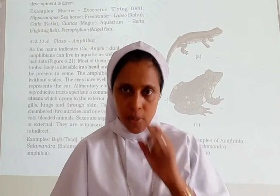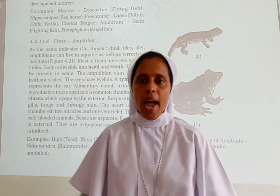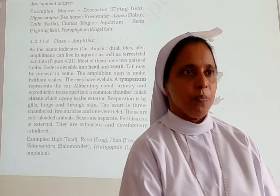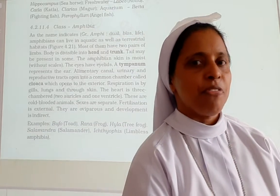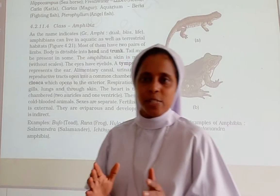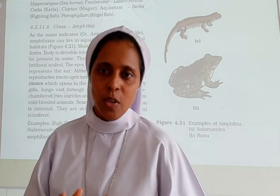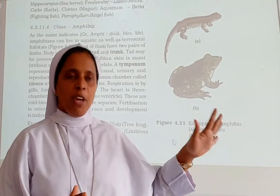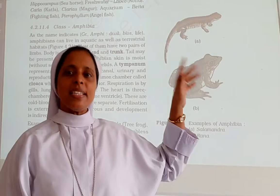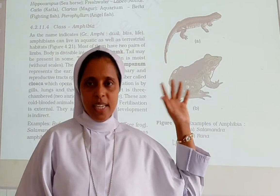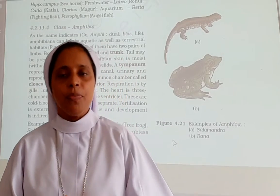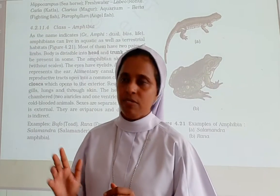Moving towards the last portion of the class. Amphibia — as the name indicates, 'amphi' means dual and 'bios' means life. So they can live on land as well as in water. These amphibians can live in aquatic as well as terrestrial habitats — both adaptations they have. Most of them will be having two pairs of limbs, as you can see in the image.